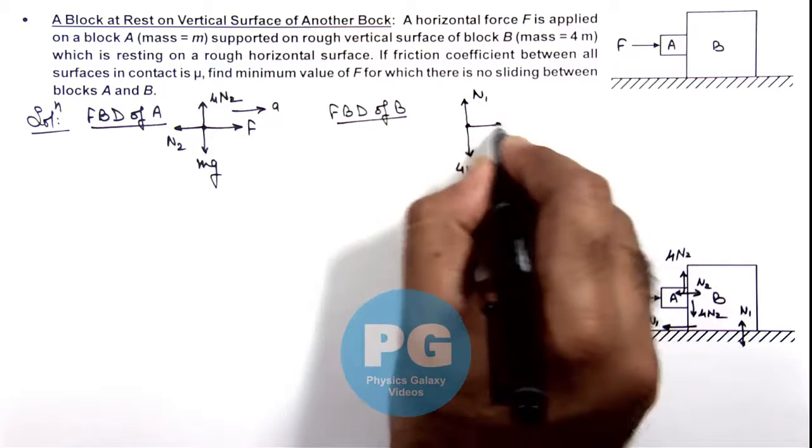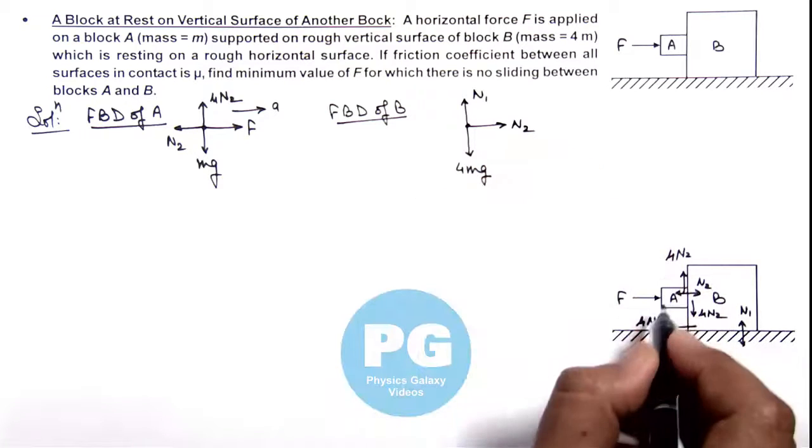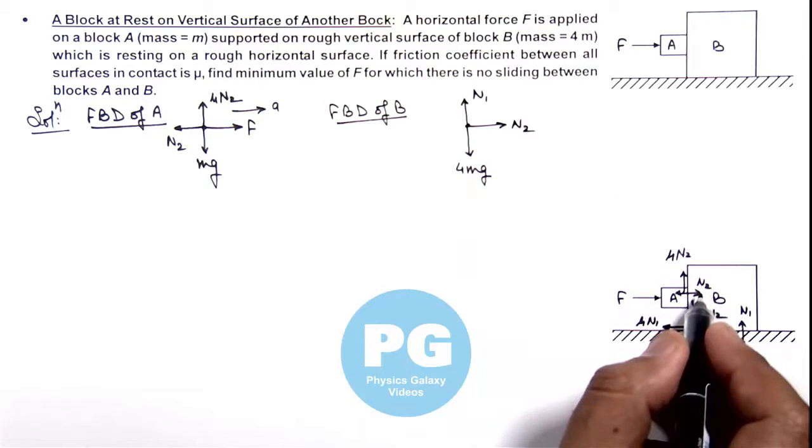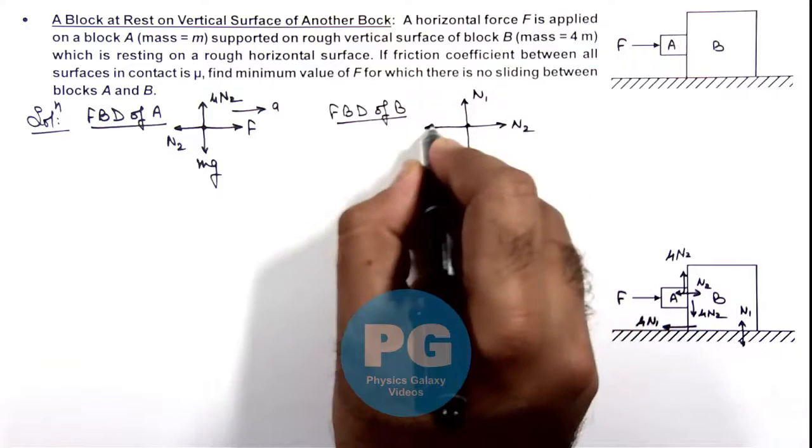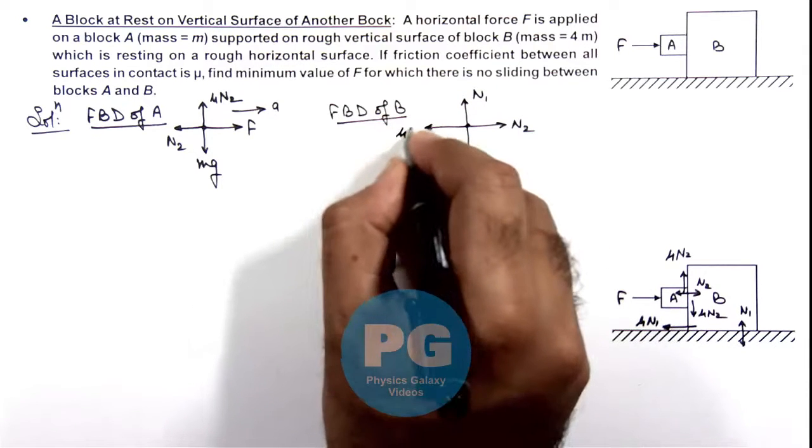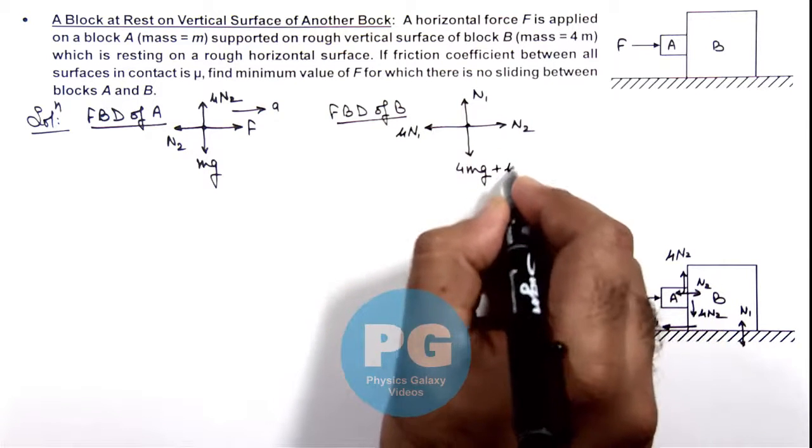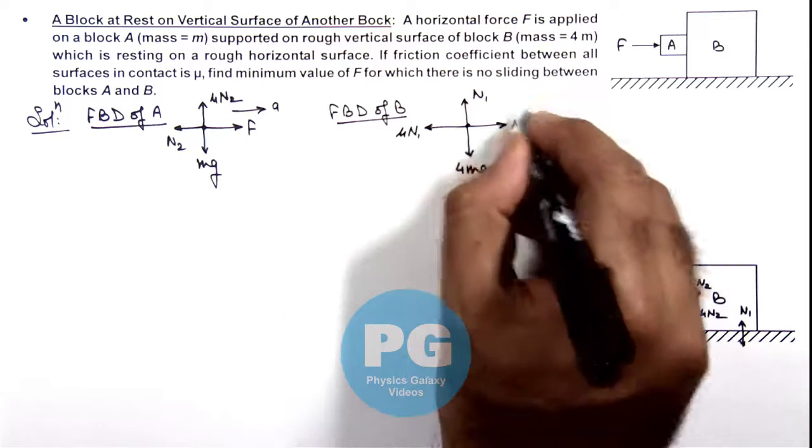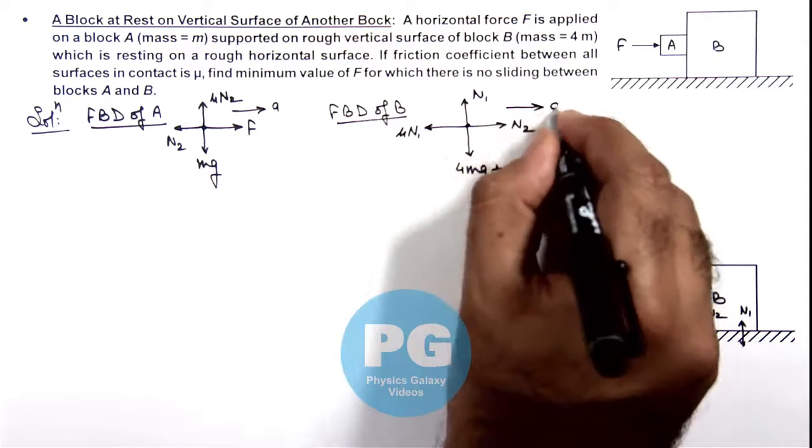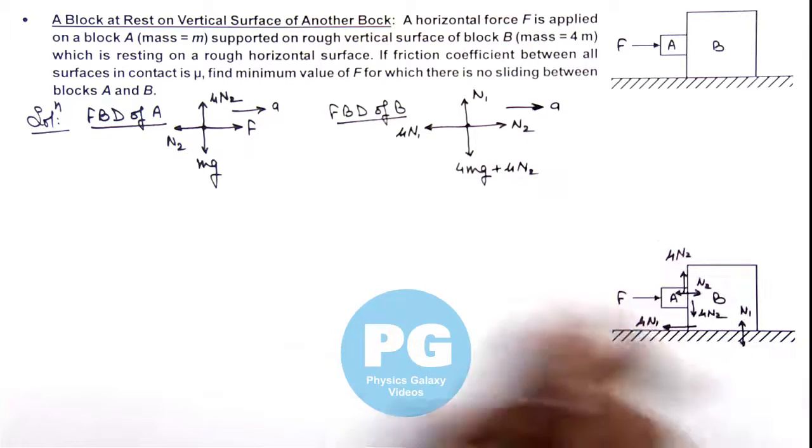Toward right it'll experience the normal reaction due to block A which is N₂. Toward left it is experiencing the friction at bottom which is μN₁, and this μN₂ will also act on block B in downward direction which can be added here. And block B is also accelerating toward right with acceleration a as the two are moving together.